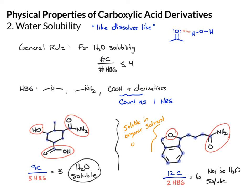One thing I'll point out: this is a case where a lot of people might make a mistake. If you were to mistakenly count this amide as two — sometimes people circle the oxygen, circle the nitrogen, and count that as two — then they would do 12 divided by three and come up with four and say it should be water soluble, but it's not. So make sure you only count these carboxylic acid derivatives as one hydrogen bonding capable group.